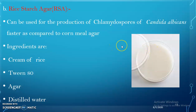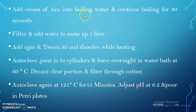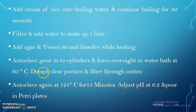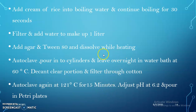Tween-80 rice starch agar (RSA) can also be used for the production of chlamydospores by Candida albicans and is faster compared to cornmeal agar. Ingredients are cream of rice, Tween-80, agar, and distilled water. To prepare: add cream of rice into boiling water, boil for 30 seconds, filter, and add water to make 1 litre. Add agar and Tween-80, dissolve while heating, then autoclave. Pour into cylinders and leave overnight in a water bath at 60°C. Decant the clear portion, filter through cotton, autoclave again at 121°C for 15 minutes, adjust pH to 6.2, and pour into petri plates.